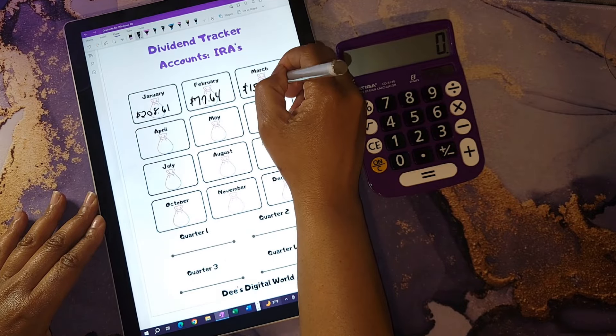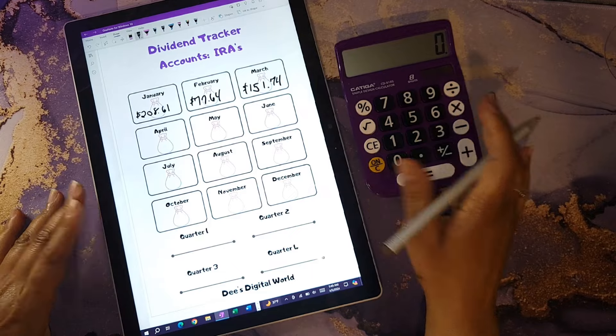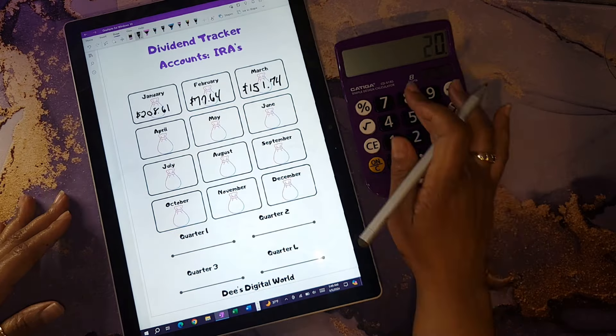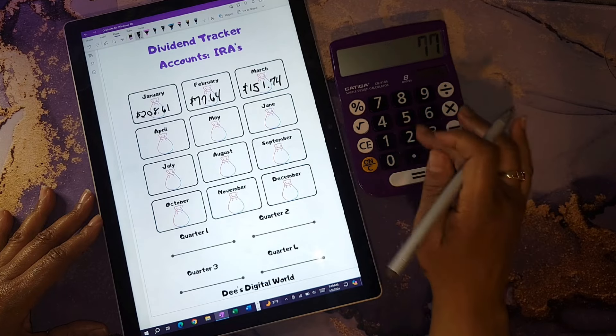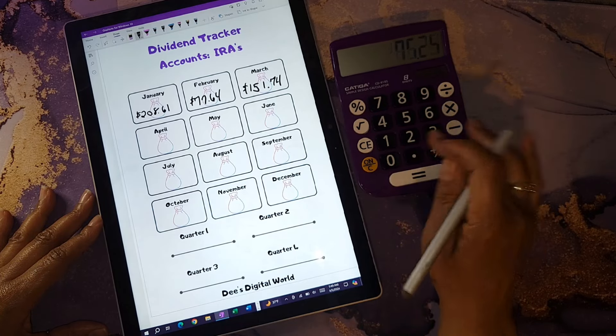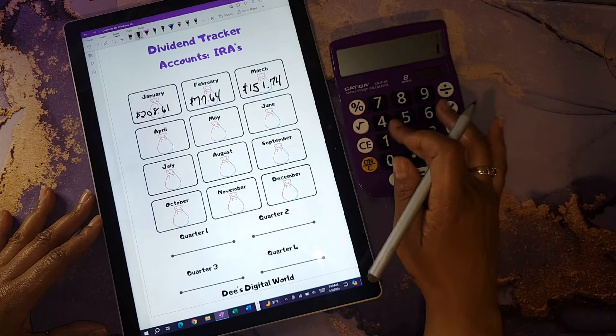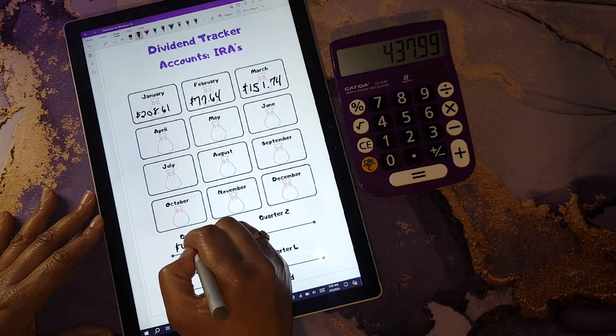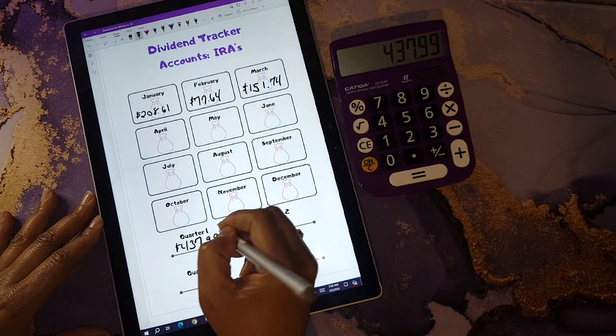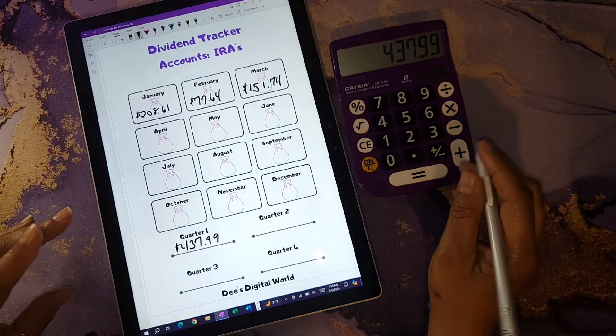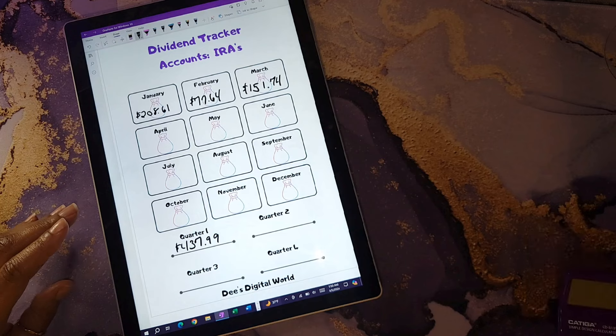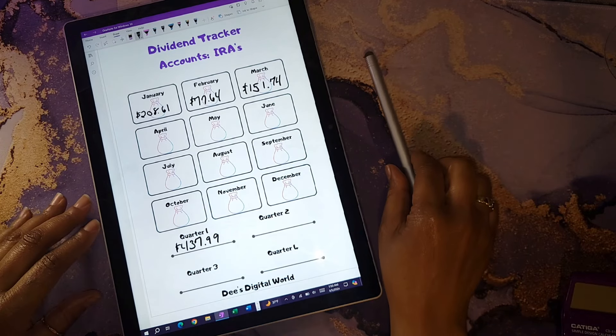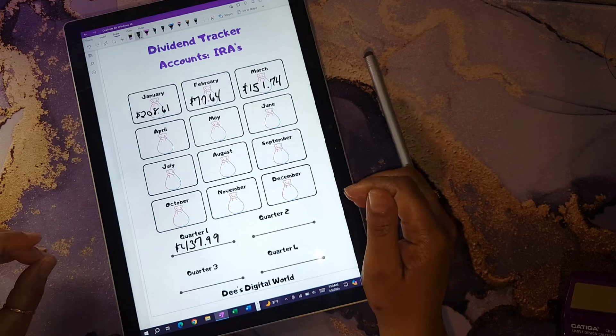I am not tracking the amount of dividends that I receive in my HSA because right now that is not important to me. Let's see what I was able to bring in for the quarter: $208.61 for January plus $77.64 for February and $151.74 for March, and that's a total of $437.99. That is very good. As you see, most of my dividends are coming from my retirement accounts, which is good. That means I have the bulk of my money invested in my retirement accounts right now, and that is okay with me.